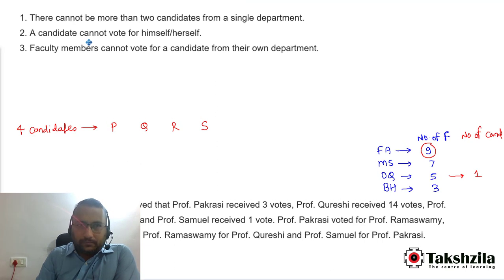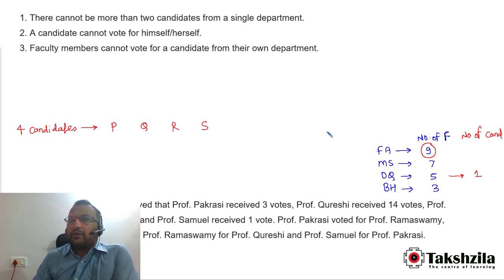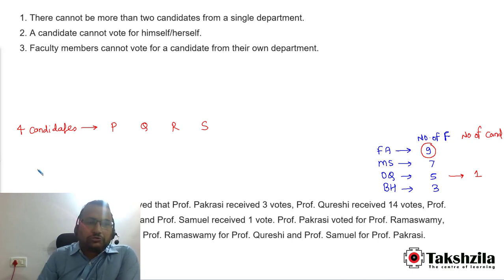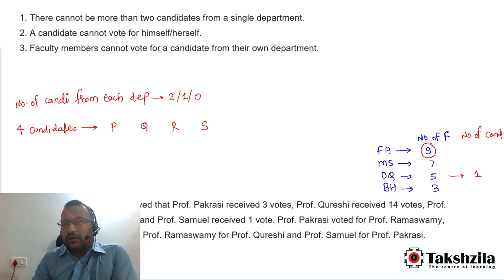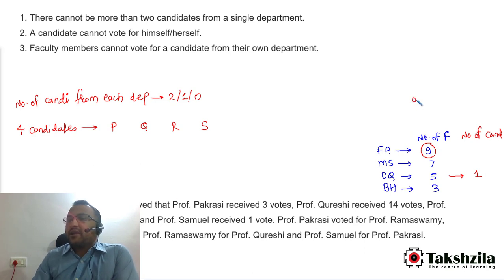There are a few rules for the election. First, there cannot be more than two candidates from a single department — the number of candidates from each department can be zero, one, or two. Second, a candidate cannot vote for himself or herself. Third, faculty members cannot vote for a candidate from their own department. So the seven non-candidate faculties from F&A cannot vote for candidates from F&A; they must vote for a candidate from another department.